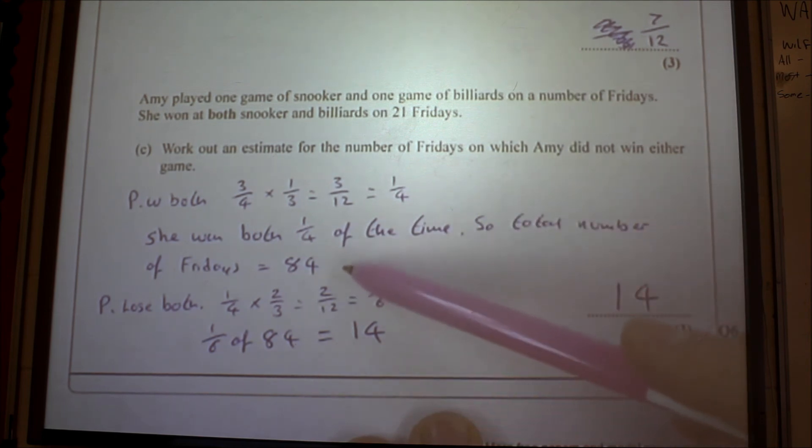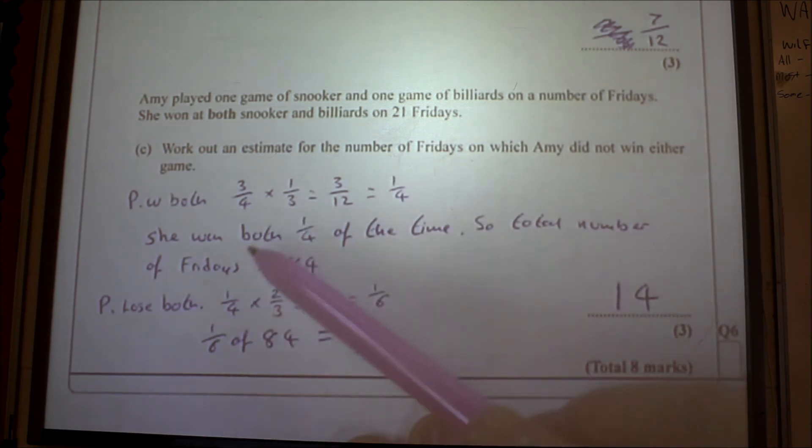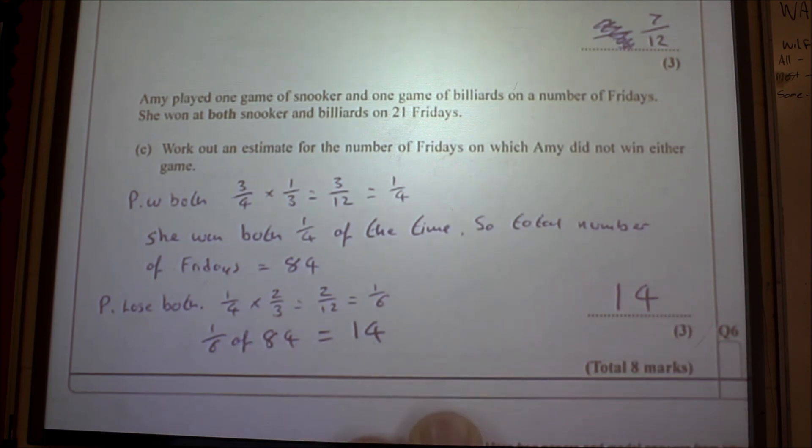And the probability she lost both is a quarter times two thirds, which is one over six. So a sixth of 84 is 14. So that's how you work that one out.